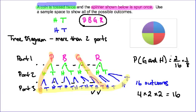To recap, we have 3 different sample spaces we'll make use of in this unit: lists, tables, and tree diagrams. Each one of them is useful for a certain type of situation.